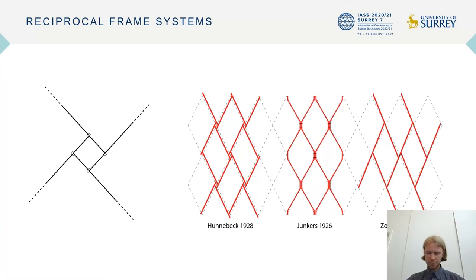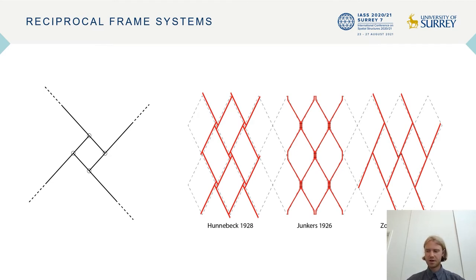The short lengths led us to pursue reciprocal frame systems, an ancient structural principle where mutually supporting beams are held in friction. Although possible in many patterns and formations, the left diagram describes a pinwheel relationship where each connection has no more than two elements. This principle can be seen in the Hunnebeck patent of 1928, a commercially successful method for making efficient roofing structures in the early part of the 20th century.